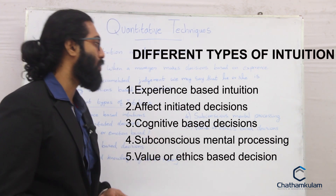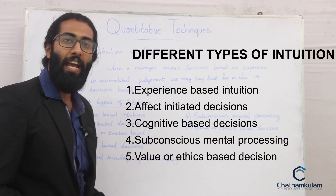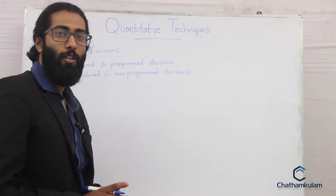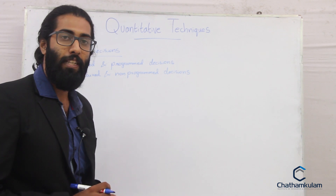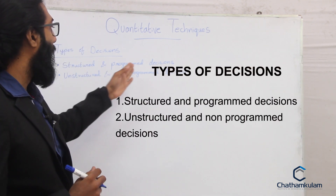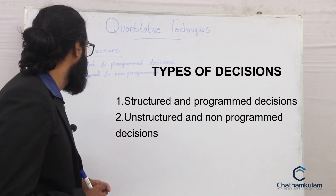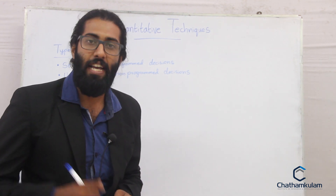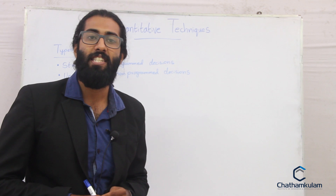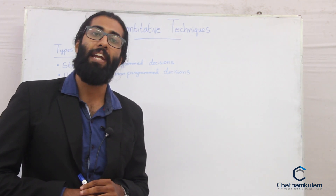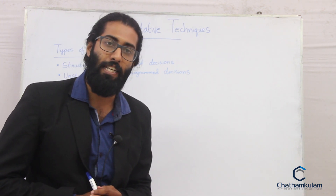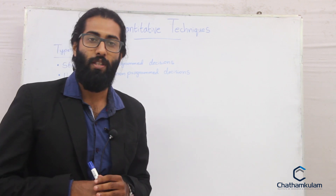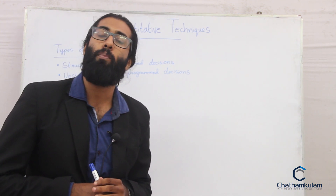The fourth type of intuition is subconscious mental processing, and the fifth is value or ethics-based decisions. Next are the types of decisions. There are basically two types: structured and programmed decisions, and unstructured and non-programmed decisions. When problems are routine in nature — simple and straightforward — we call them structured and programmed decisions, solved by creating rules, policies, and procedures. But if a problem is unique and complex, we need to think out of the box — these are called unstructured and non-programmed decisions.